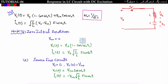Now I will take two cases. Case 1: zero initial condition. This means VC(0) equals zero, so put VCₒ equals zero in the equations. Then VC(t) equals Vs(1 minus cos(ω₀t)), and IL(t) equals Vs·√(C/L)·sin(ω₀t).